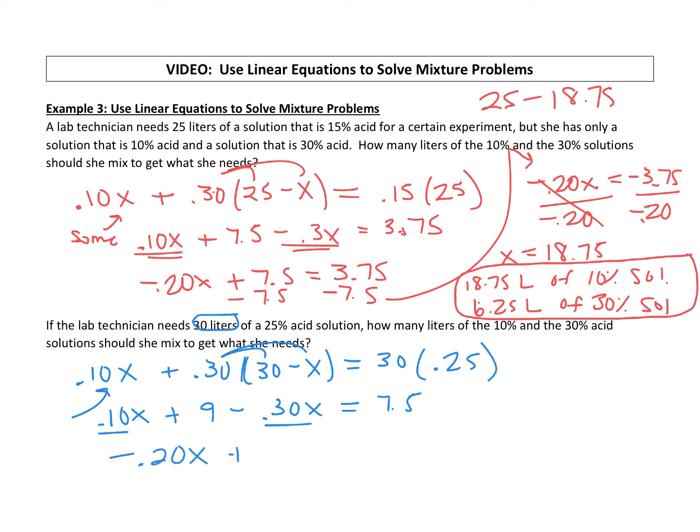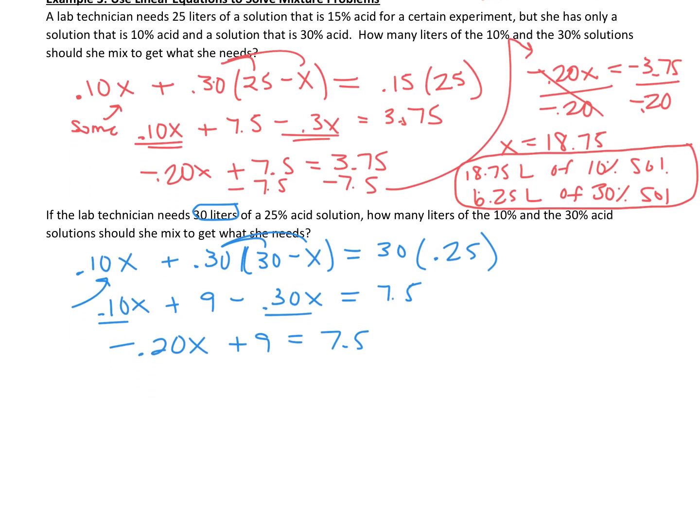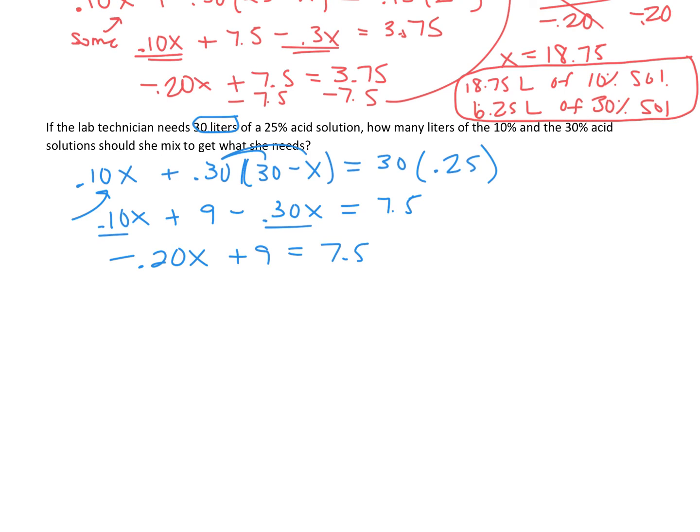Combine like terms, we get a negative 0.20x plus 9 equals 7.5. Subtract 9 from both sides, negative 0.20x equals negative 1.5. Divide both sides by negative 0.20 and x equals 7.5.